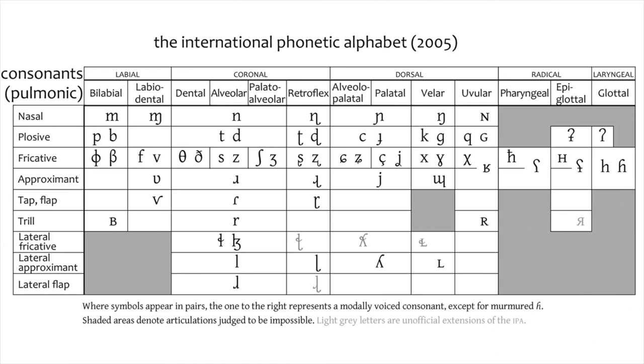Notice the IPA chart has cells, and many of these cells are occupied by two symbols. These are the voiced and unvoiced pairings, like, for example, F and V from earlier.